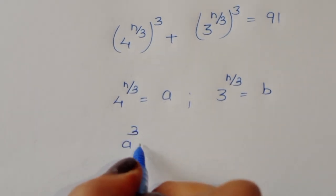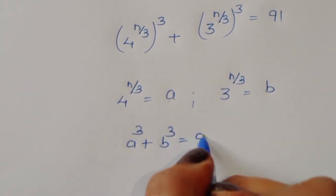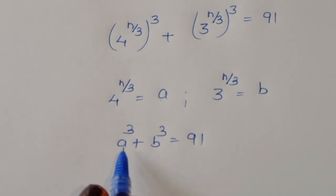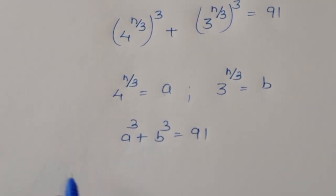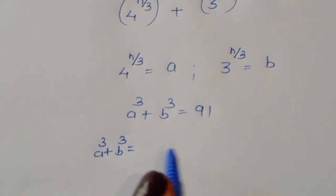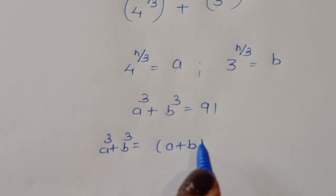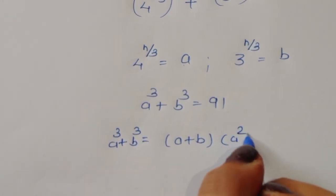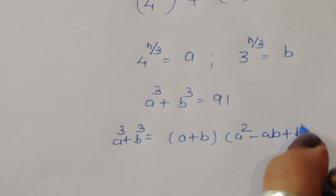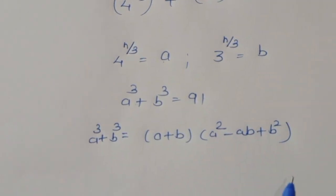It becomes a cube plus b cube is equal to 91. We know the formula: a cube plus b cube equals (a plus b) times (a squared minus ab plus b squared). This is the formula we will now apply.